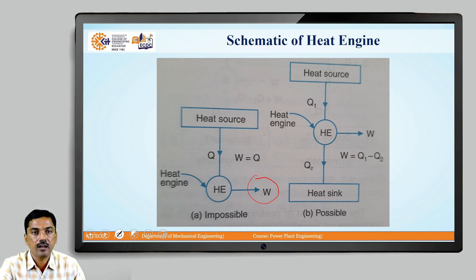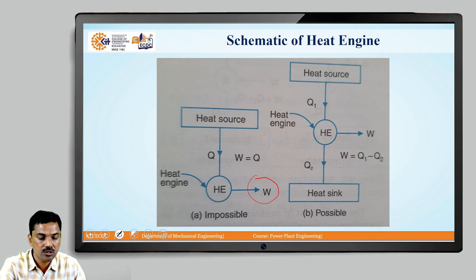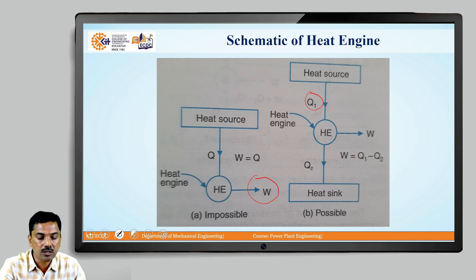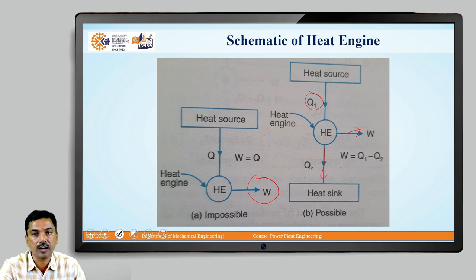Then, according to the second law of thermodynamics, you can see from the second figure there is a heat source which is supplying the Q1 amount of heat from the reservoir to the heat engine, and this heat engine converts W amount of work and the remaining Q2 amount of heat is rejected to another reservoir or low temperature reservoir.